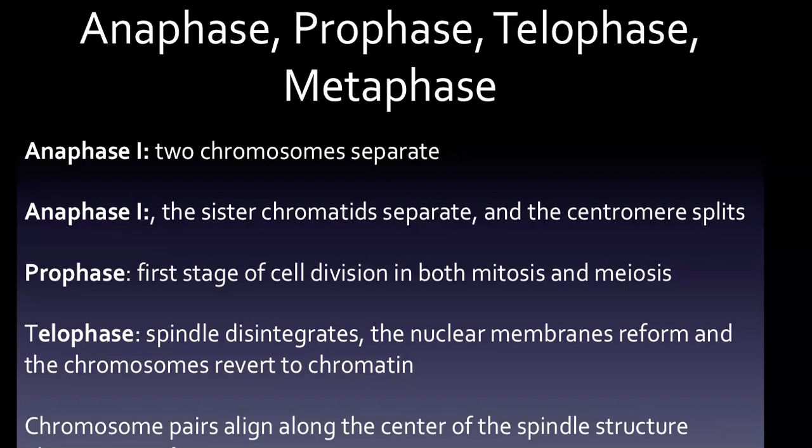Now let's look at the phases: Anaphase, Prophase, Telophase, and Metaphase. The last part of Metaphase ran off the screen, so we'll cover that when we get there. Anaphase one begins with two chromosomes separating and moving towards opposite poles of the cell as a result of the action of the spindle. In Anaphase two, the sister chromatids separate and the centromere is split, which causes the chromatids to separate.